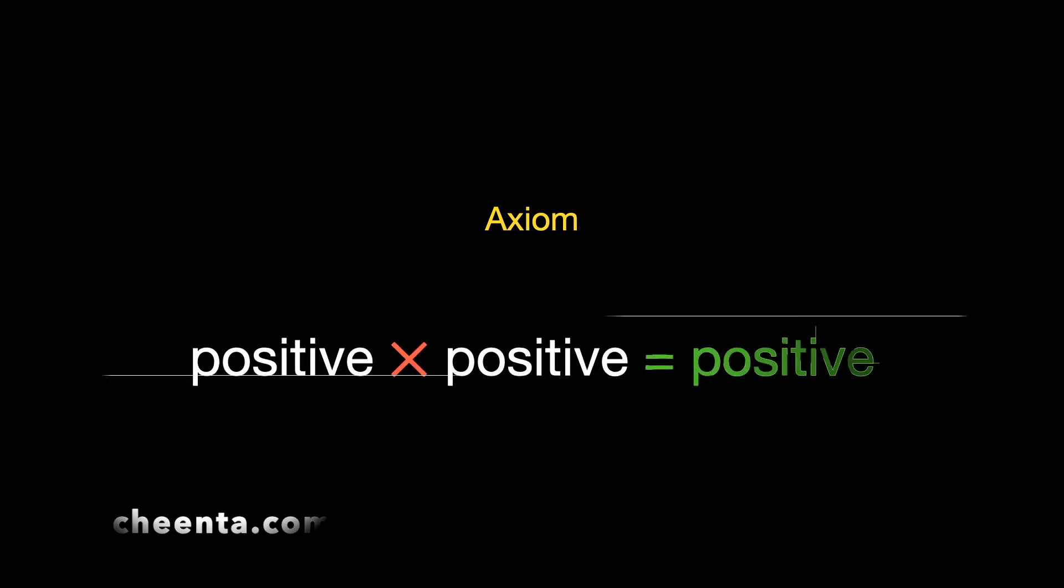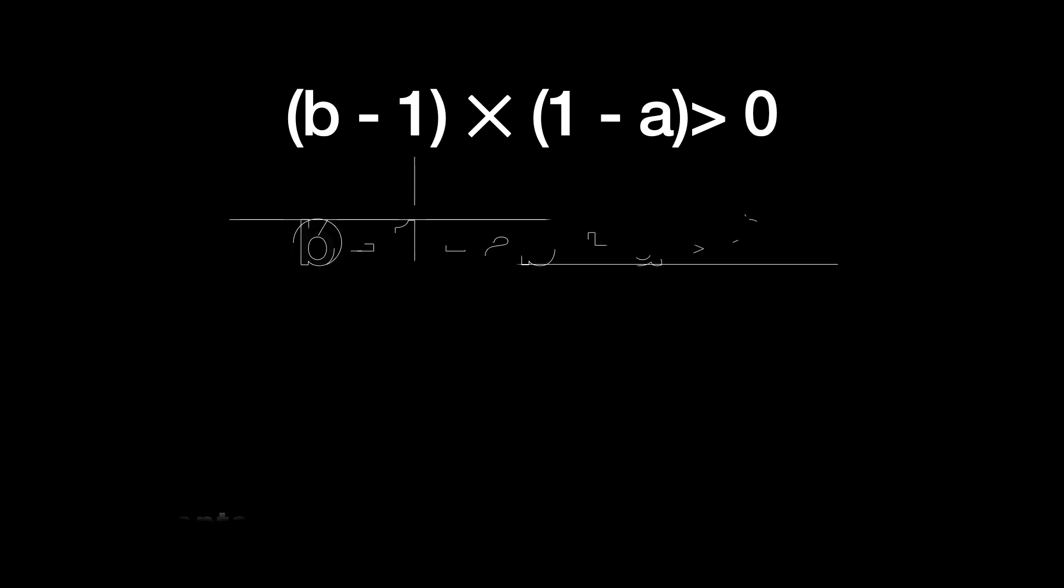Now, we come back to that axiom, that little axiom that we talked about: positive times positive is positive. Let's use that. Using that, we know that B minus 1 times 1 minus A, the product of these two positive quantities is greater than 0.